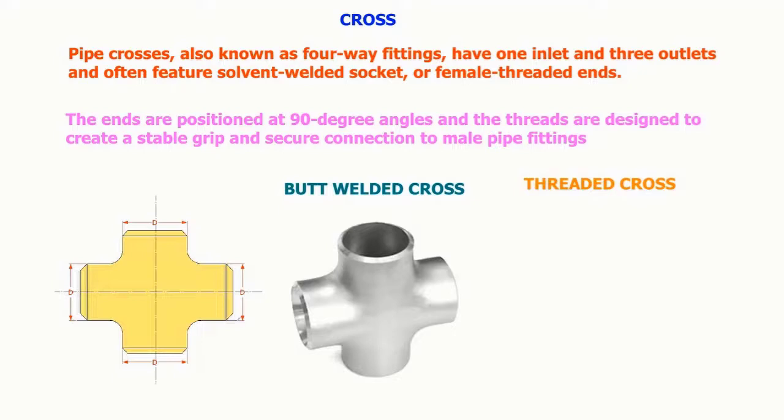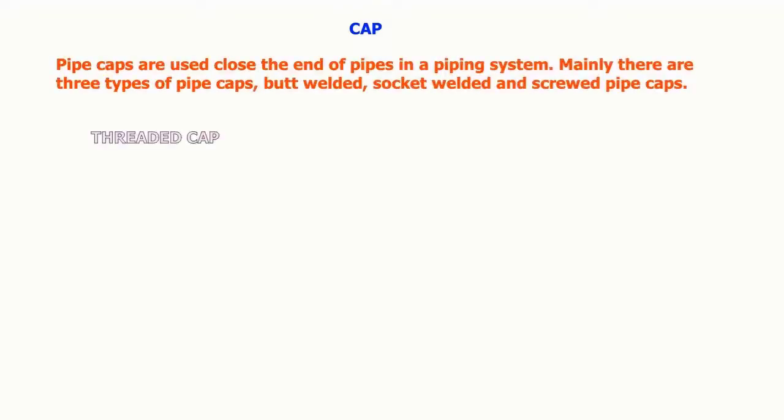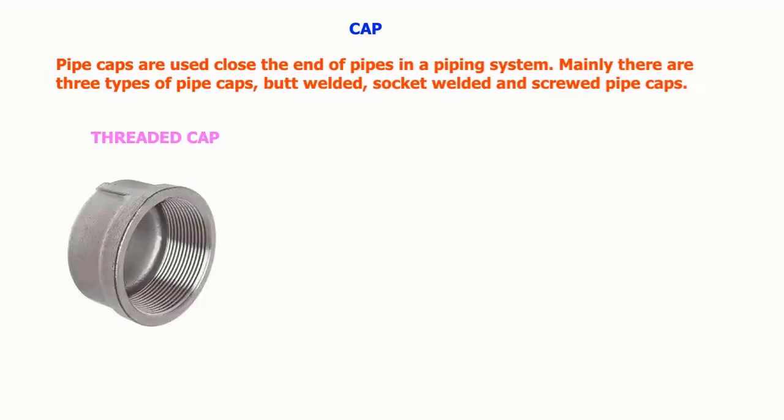Pipe caps are used to close the end of pipes in a piping system. Mainly there are three types of pipe caps: butt welded, socket welded, and screwed pipe caps.